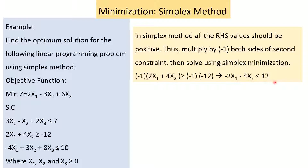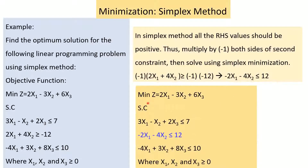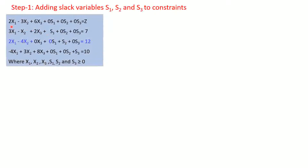The new linear programming problem now has all positive right-hand side values. We can proceed to step 1: add slack variables s1, s2, s3 to the constraints to convert each inequality to equality.